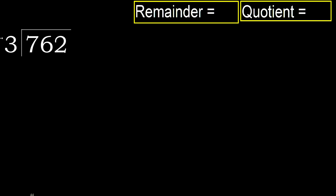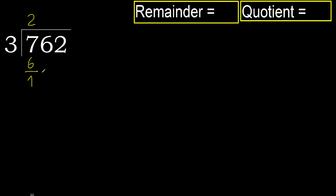762 divided by 3. 7 is not less, therefore with 7. 3 multiplied by which number is nearest to 7 but not greater? 3 multiplied by 3 is 9 — 9 is greater. 3 multiplied by 2 is 6, which is not greater. Subtract: 7 minus 6 is 1.